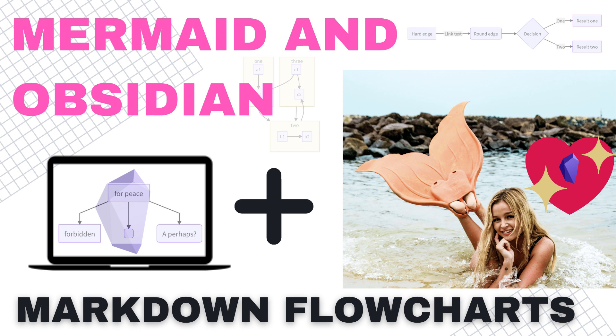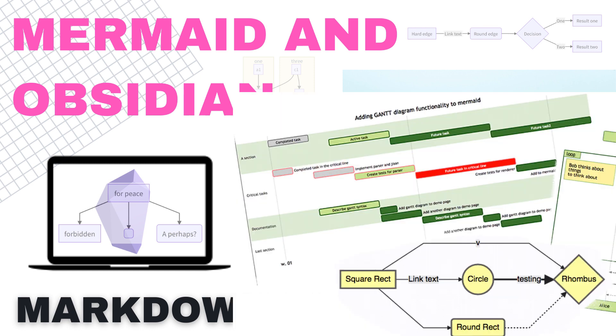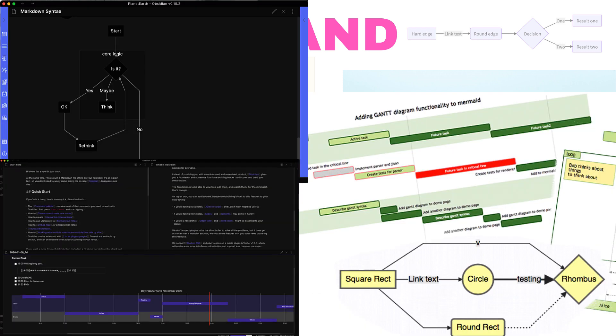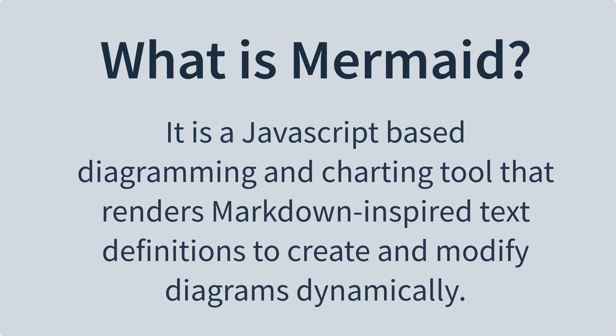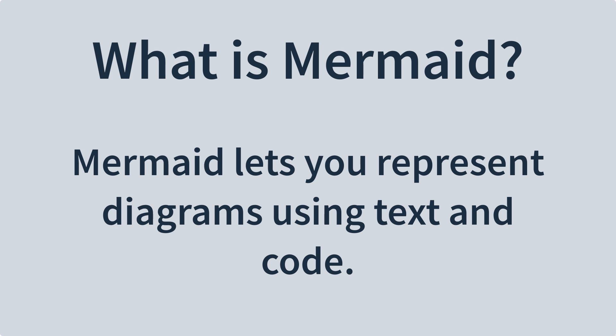Hello everyone, my name is Anton and in this video I want to get into Mermaid for Obsidian. If you did not know, Obsidian supports diagrams and charts by leveraging Mermaid. Mermaid is a JavaScript-based diagramming and charting tool for rendering markdown text. It lets you represent diagrams using text and code, and in Obsidian it does this by leveraging markdown format.